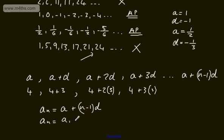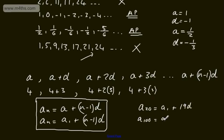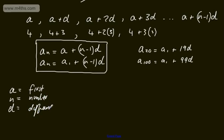You might also see this written as A_n = A₁ + (n − 1)D, where A and A₁ both refer to the first term. For example, the 20th term would be A₁ + 19 × D, and the 100th term would be A₁ + 99 × D. I strongly suggest writing down A, N, and D whenever you're working with arithmetic sequences: A is the first term, N is the number or position of the term, and D is the common difference.